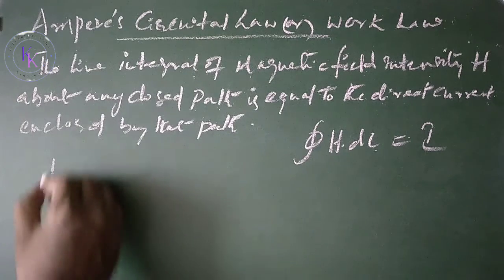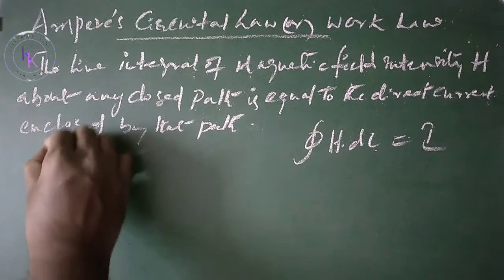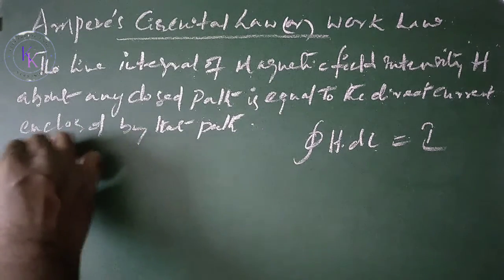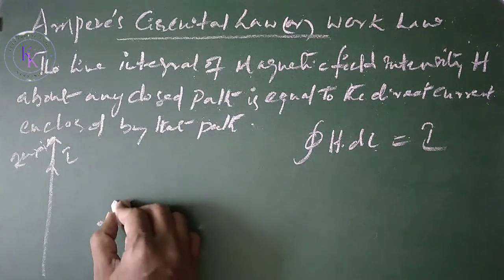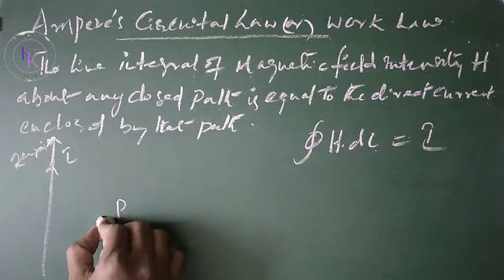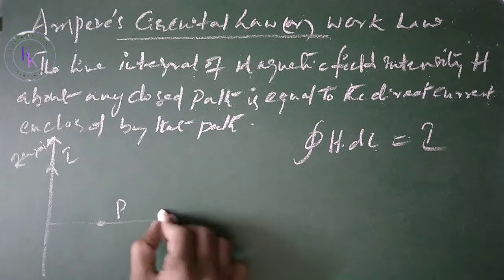Consider an infinite line carrying a current I along the z-axis. Now we need to find out the magnetic field intensity at a point P which is on the x-axis.